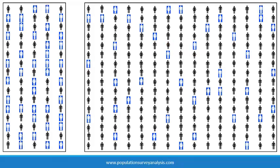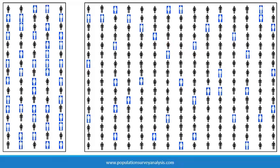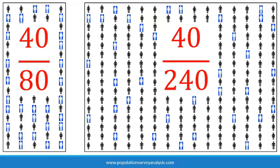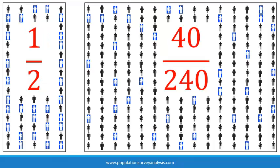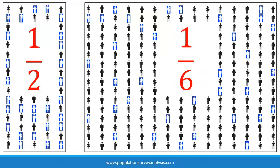If we sampled 40 households from each village and estimated the same indicator, which village estimate would we be more confident in? Think about the fraction of the population that's being sampled. We would be more confident in the estimate from the smaller village, because we capture one-half of the total population in that sample, where we only capture one-sixth of the total population in the larger village. In other words, we gain confidence or precision in our estimates when the sample captures a larger fraction of the total population.